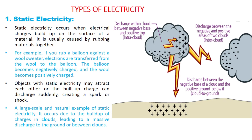Objects with static electricity may attract or repel each other, or the built-up charges can discharge suddenly. This might result in a spark or an electric shock. On a large scale, a natural example of this effect is lightning.